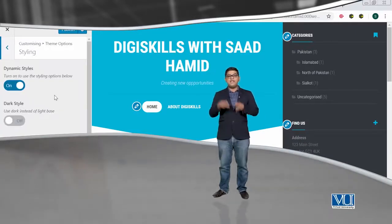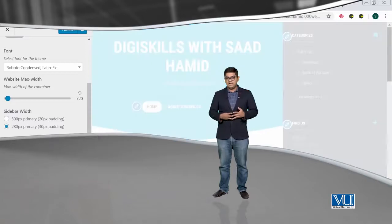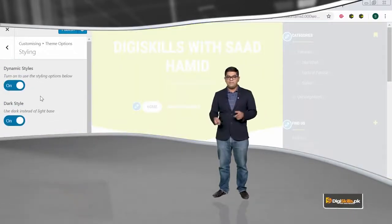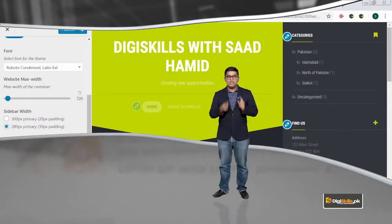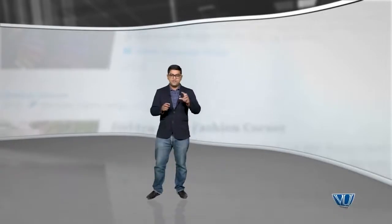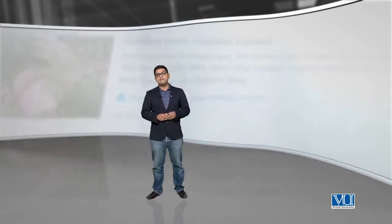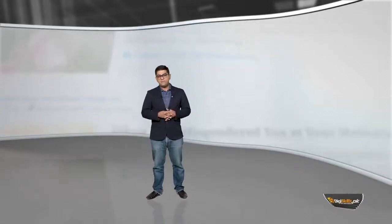Just like you can make changes on the left-hand side, you can see those changes previewed on the right-hand side. This is a live preview functionality that WordPress offers. The changes are only visible to you until you publish them — your viewers or customers will not see the site live until you do. You can also use the desktop, mobile, or tablet icons to see how your site will look on different devices.